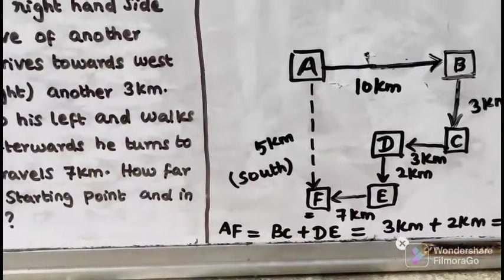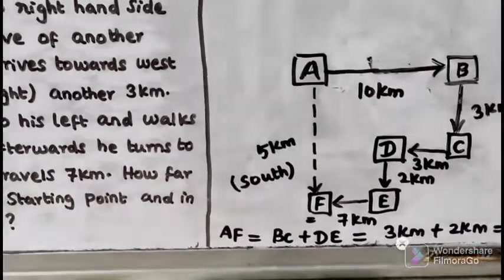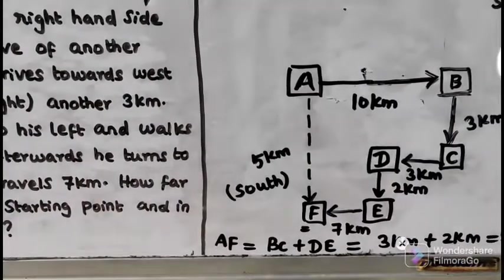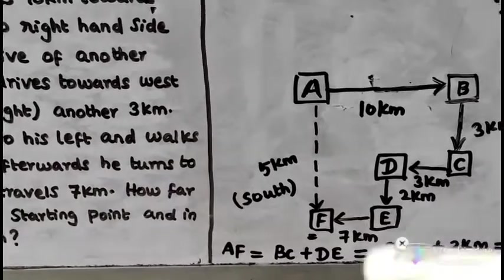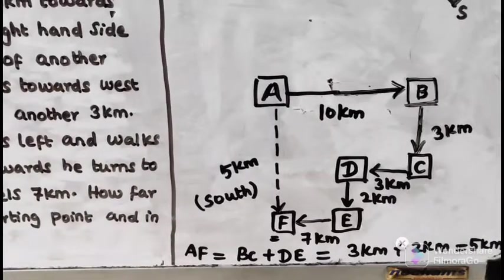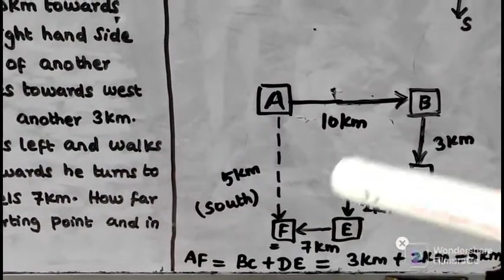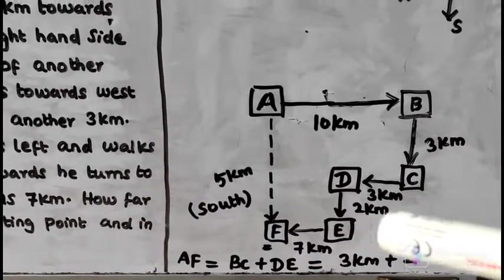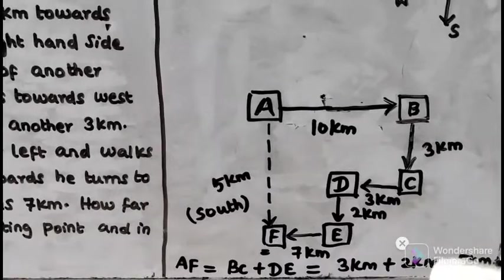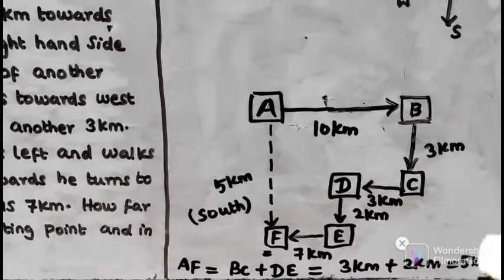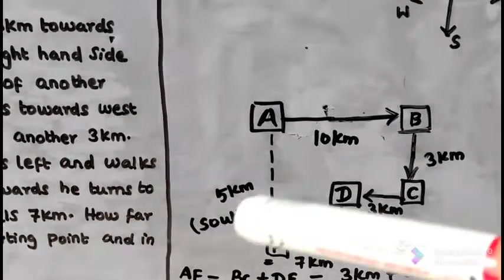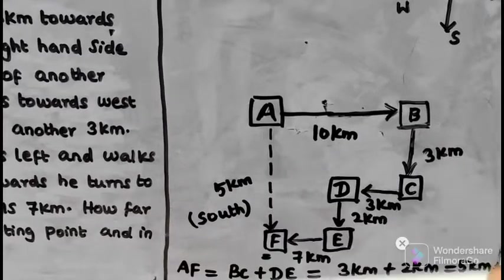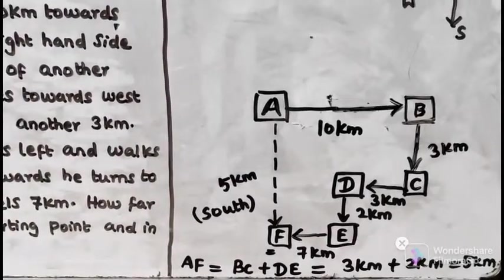To calculate AF, we add BC and DE. BC is 3km, DE is 2km. So AF equals 3km plus 2km equals 5km. The direction from A to F is South. So the answer is 5km South.